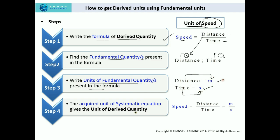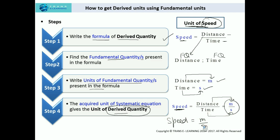The fundamental unit of distance is meter and the fundamental unit of time is second. So we have written those here. Now the fourth point: the acquired unit of the systematic equation gives the unit of the derived quantity. As discussed in the part one video on derived units, the derived quantity and its units are the result of systematic equations from multiplying or dividing fundamental quantities. So we get the derived quantity speed, which is distance upon time, by dividing the fundamental unit of distance (meter) by the fundamental unit of time (second). So the unit of speed is meter per second.